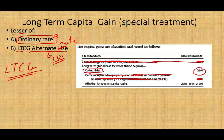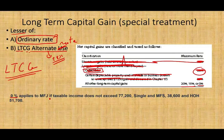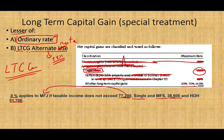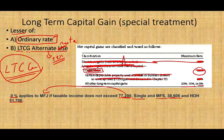If the asset is not a collectible, the 28% rate does not apply. Instead, the long-term capital gain rate is 0%, 15%, or 20%. The 0% rate applies if your taxable income does not exceed $77,200 for married filing jointly, $38,600 for single or married filing separately, or $51,700 for head of household. Simply put, if your taxable income is below these thresholds, you pay no tax on long-term capital gains — the government rewards you for holding the asset longer than a year.